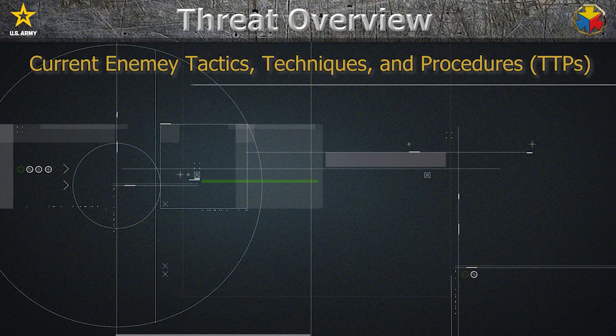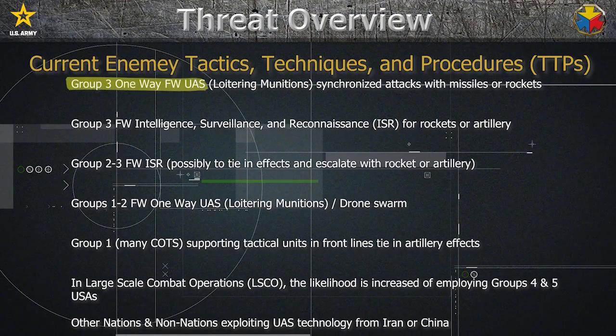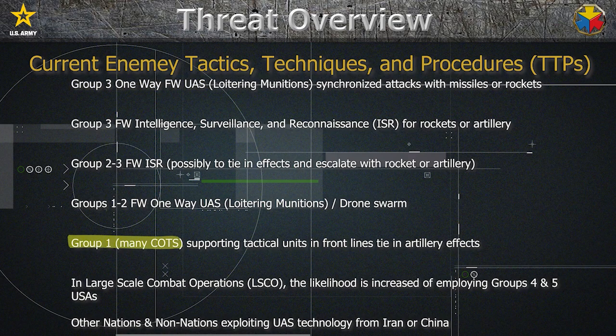The UAS threat is evolving. We're going to look at some current enemy TTPs — tactics, techniques, and procedures — being utilized around different theaters. There are trends of enemy Group 3 one-way fixed-wing UASs, also referred to as loitering munitions, employed to strike hard targets in synchronized attacks with missiles, cruise missiles, or rockets. Group 1 UASs are being utilized mainly on the front lines. Many of these are commercial off-the-shelf. Group 1 UASs are often seen used in conjunction with artillery strikes and are a good indicator of potential incoming on your friendly position.